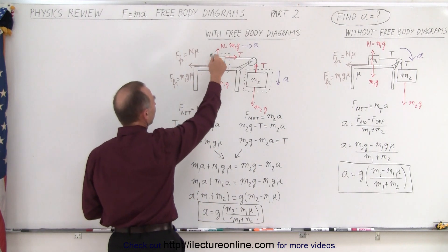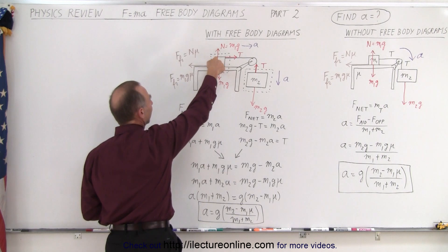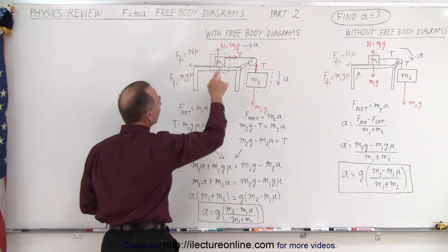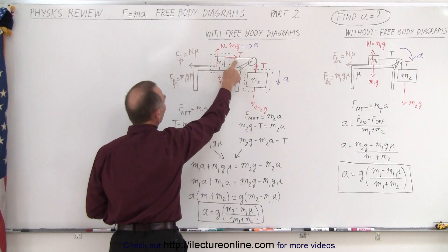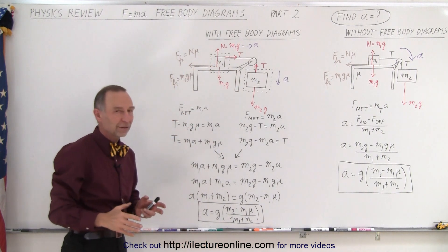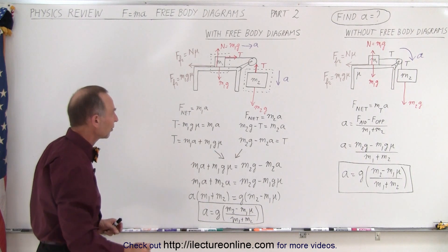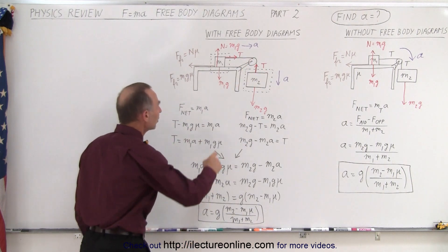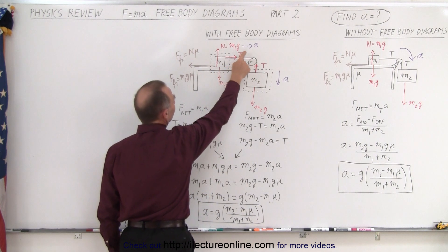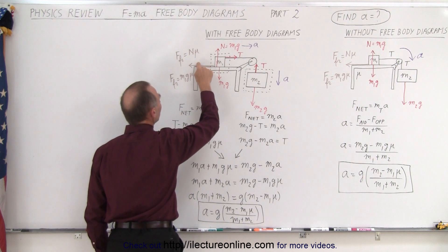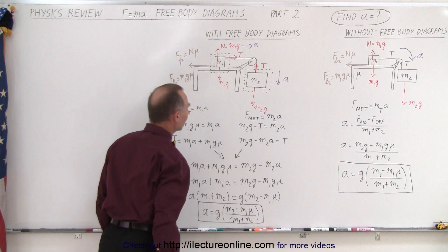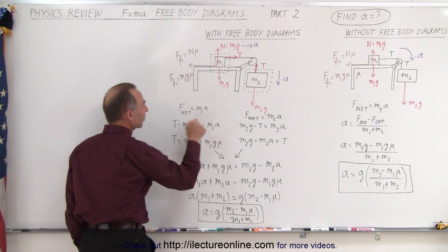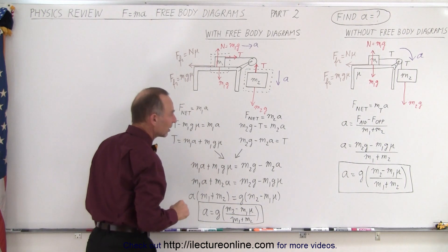Starting with the first free body diagram, we notice that the force of gravity and the table pushing back cancel each other out, so there's no acceleration in that direction. We're left with two forces: the tension pulling to the right and the friction force pulling to the left. Notice that tension is always relative to the object you're considering — relative to M1, tension is to the right. The tension is the aiding force and the friction is the opposing force, so the aiding force minus the opposing force equals M1 times acceleration. We solve this equation for T.